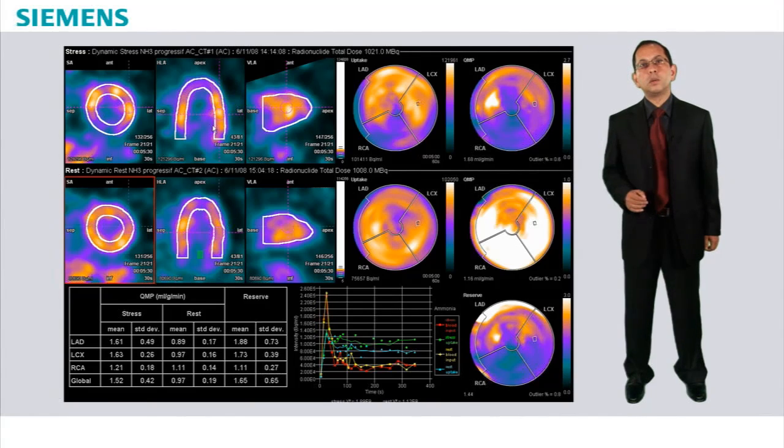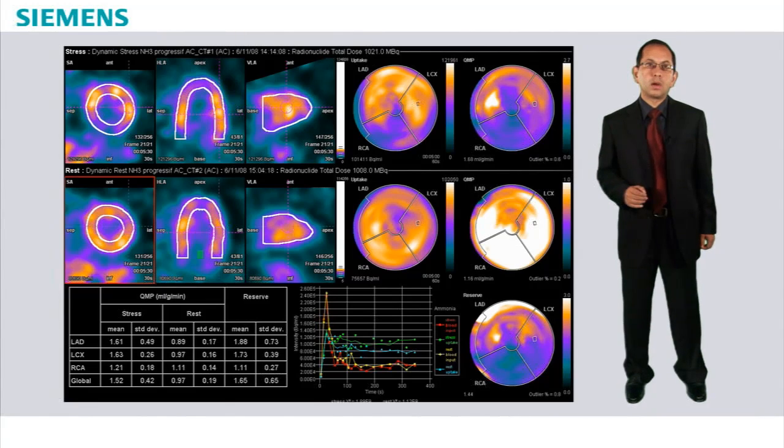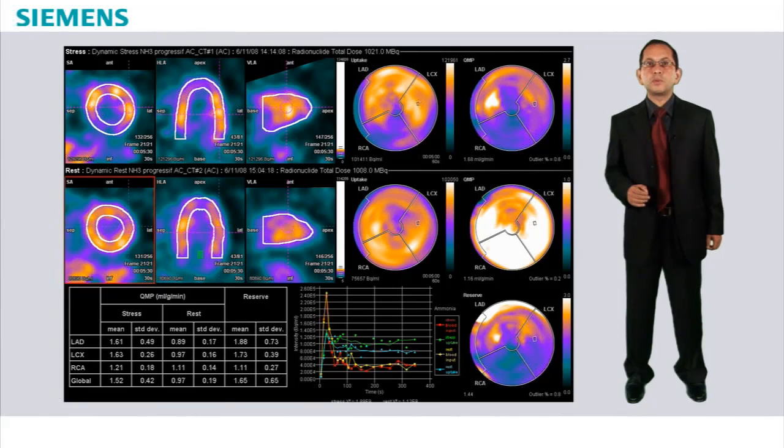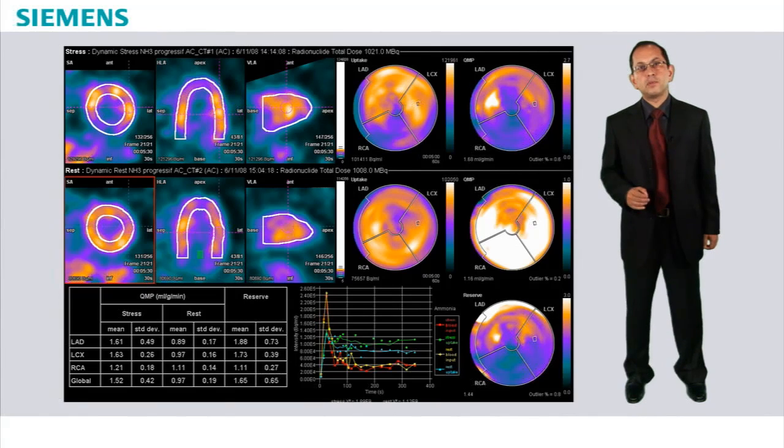Cross hairs indicate the location of the corresponding areas in the short axis, horizontal long axis, and vertical long axis views. This is how we obtain flow for both peak stress and rest, and calculate the corresponding coronary flow reserve for a quantitative evaluation of myocardial blood flow.